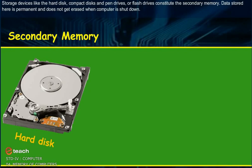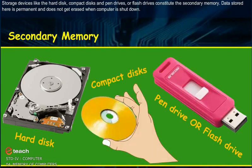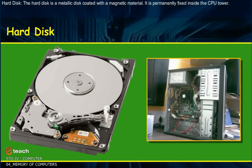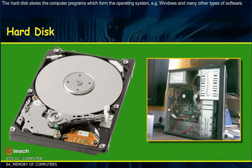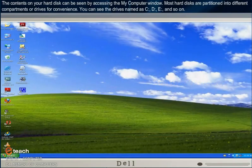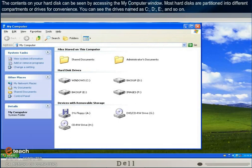Storage devices like the hard disk, compact disk, and pen drives or flash drives constitute the secondary memory. Data stored here is permanent and does not get erased when the computer is shut down. The hard disk is a metallic disk coated with a magnetic material. It is permanently fixed inside the CPU tower. The hard disk stores the computer programs which form the operating system — that is, Windows — and many other types of software. The contents on your hard disk can be seen by accessing the My Computer window. Most hard disks are partitioned into different compartments or drives for convenience.